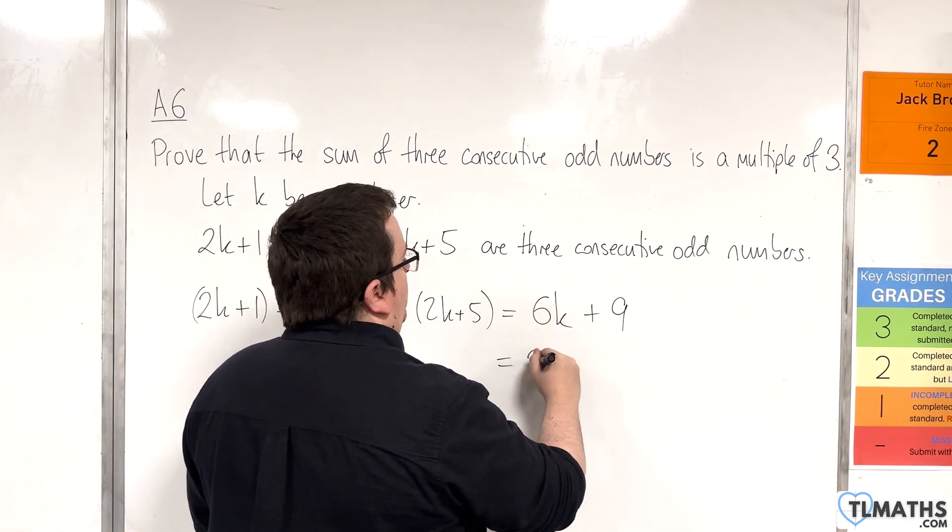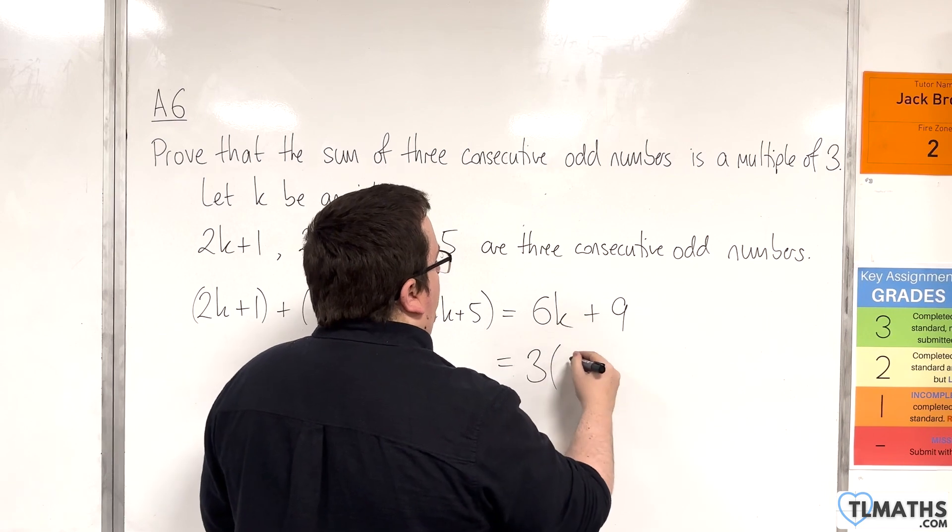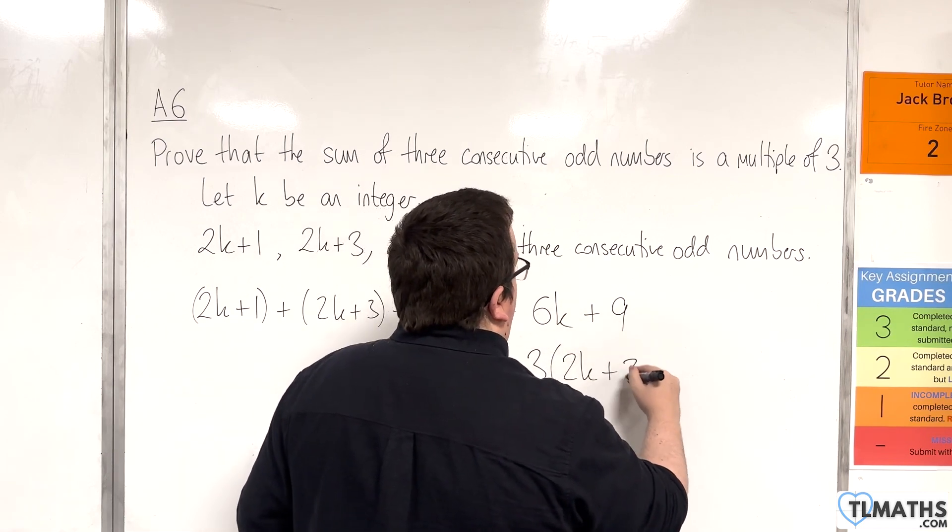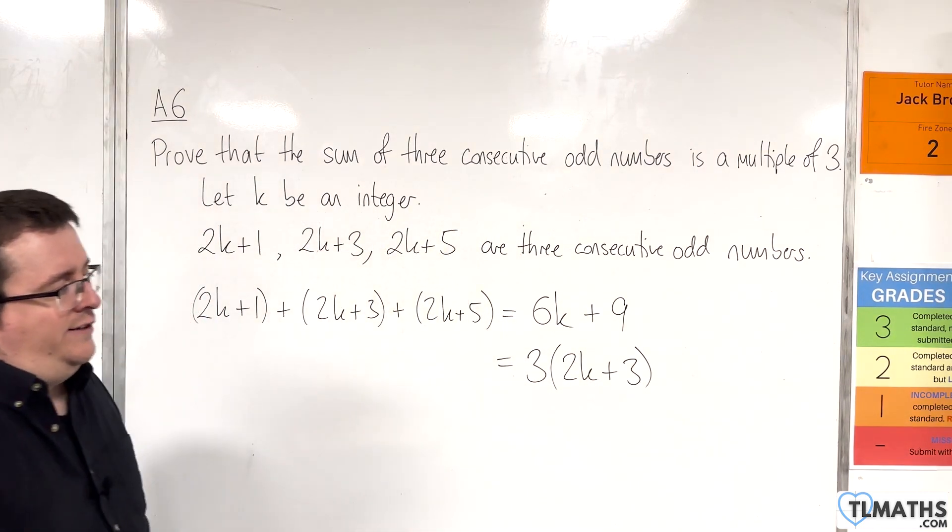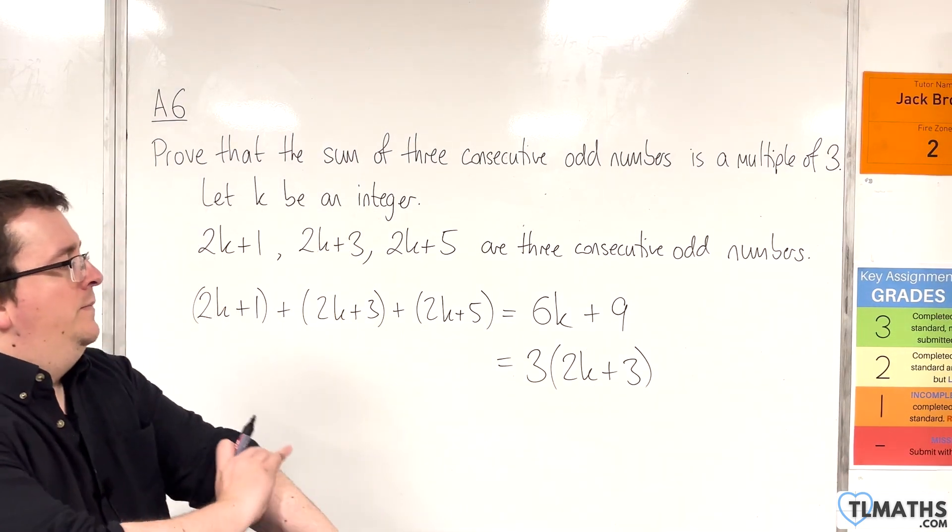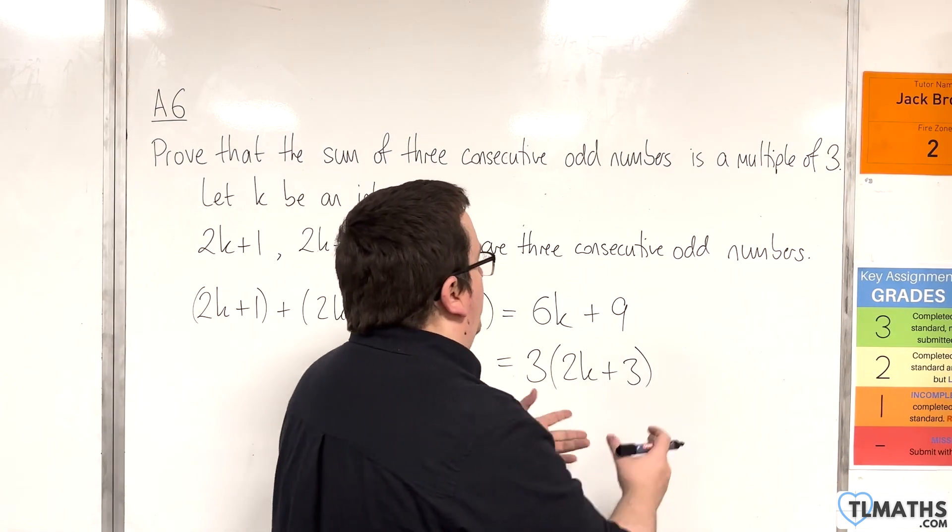Now we can factor 3 out of those two terms. We'll have 3 times 2k plus 3. Now if k is an integer, then 2k plus 3 is an integer, so we've got 3 lots of an integer.